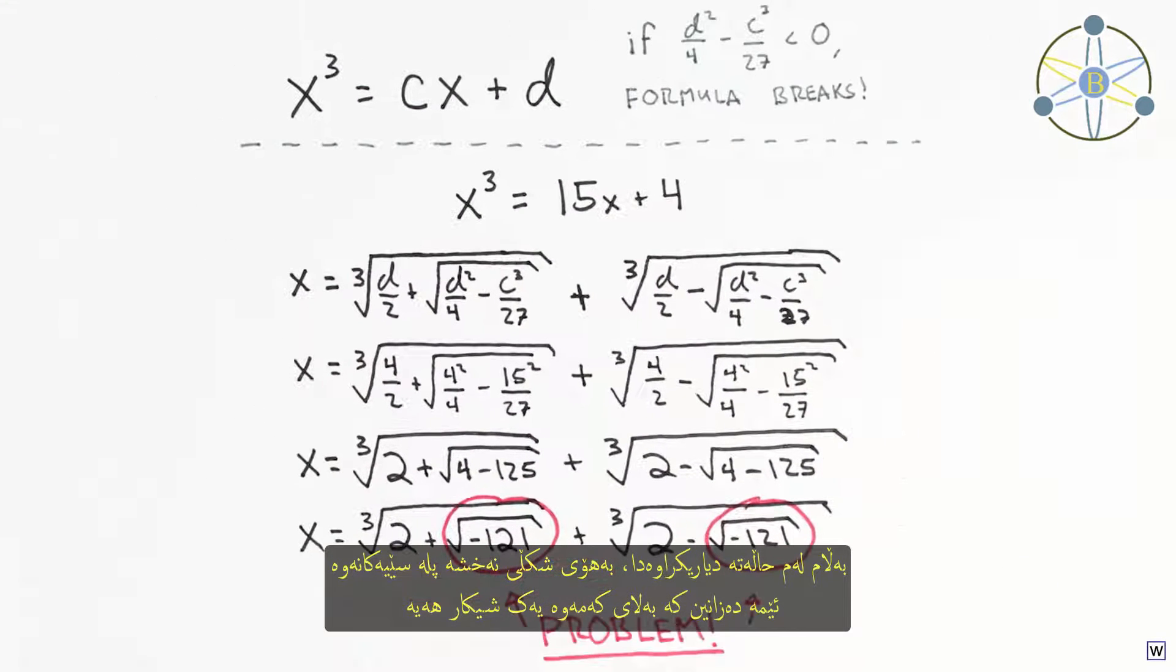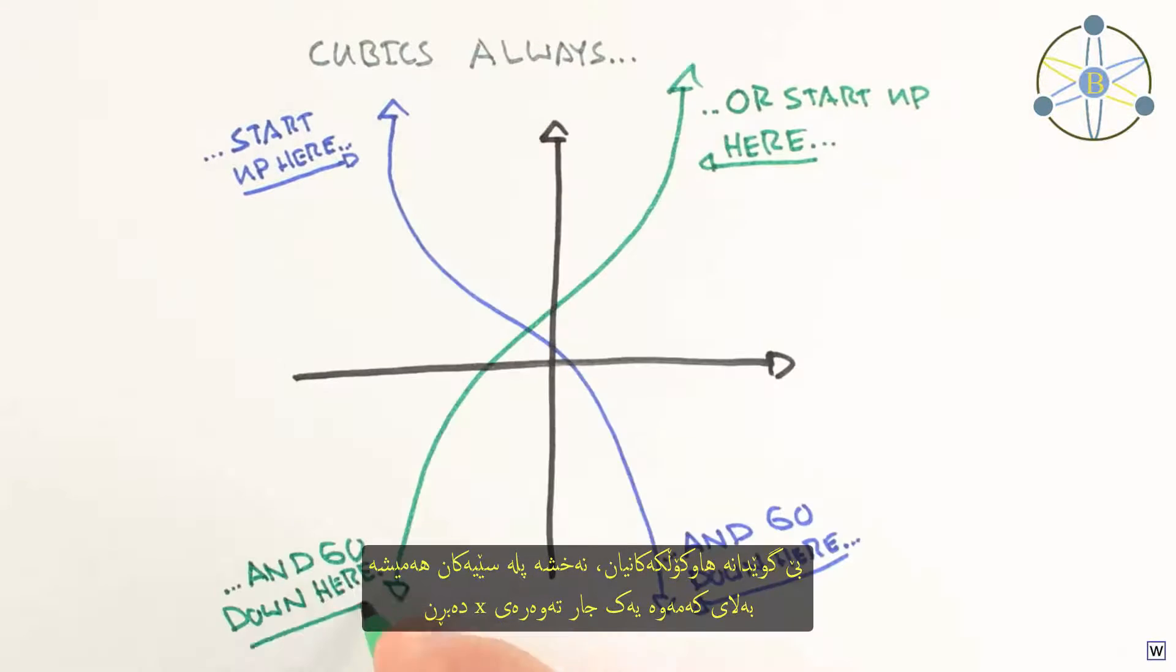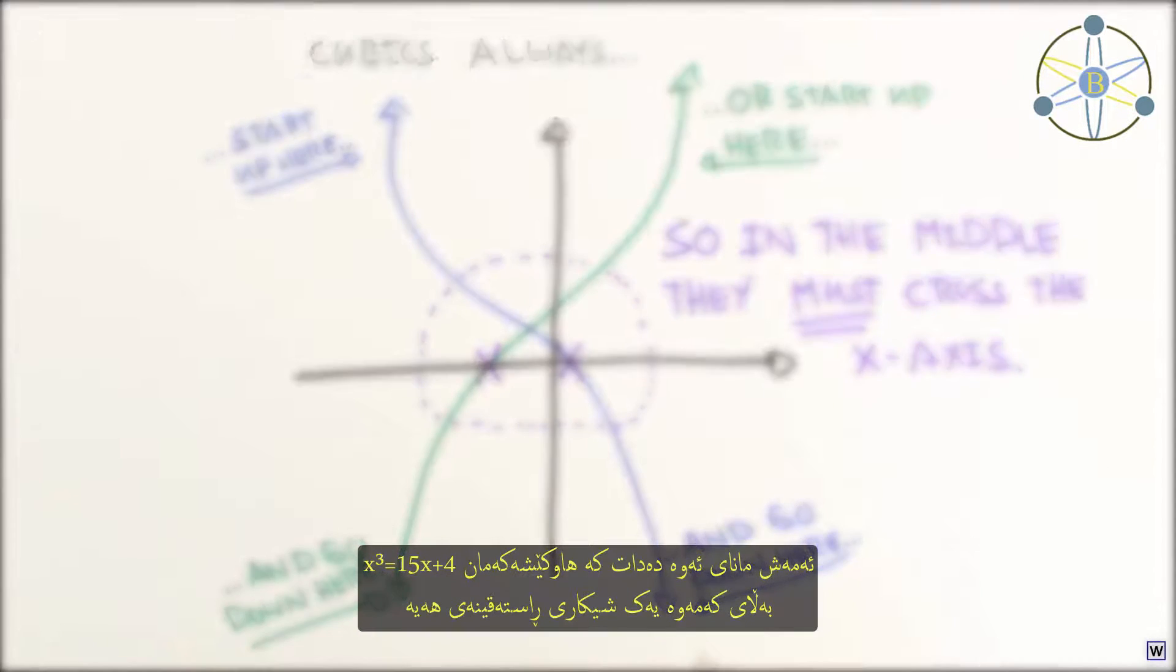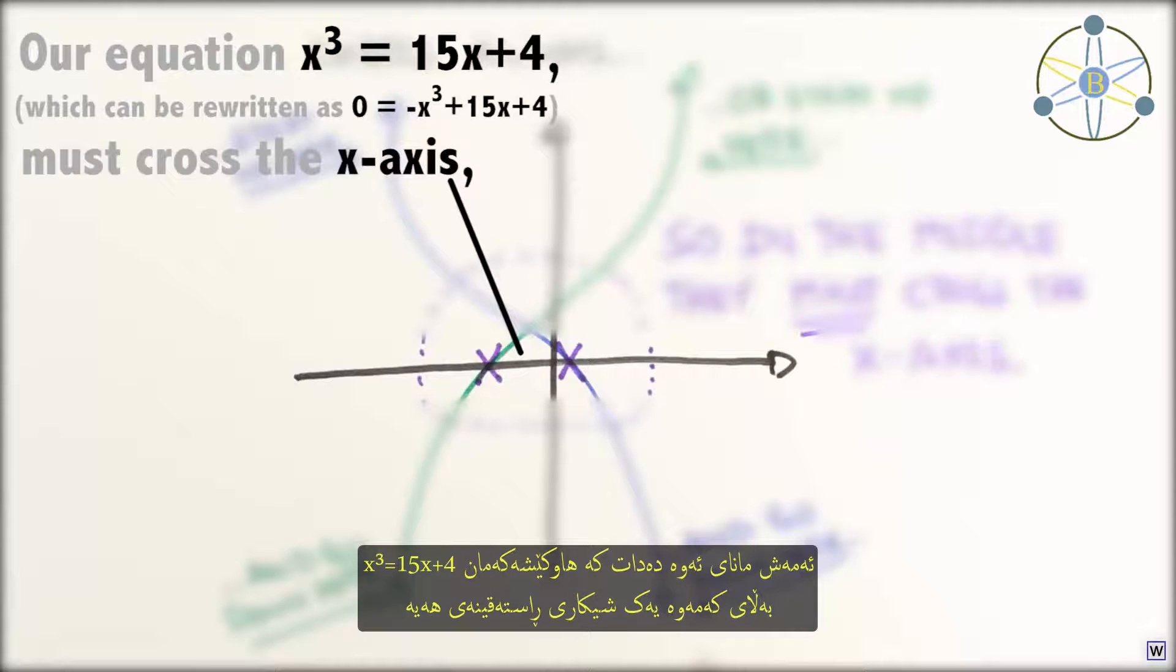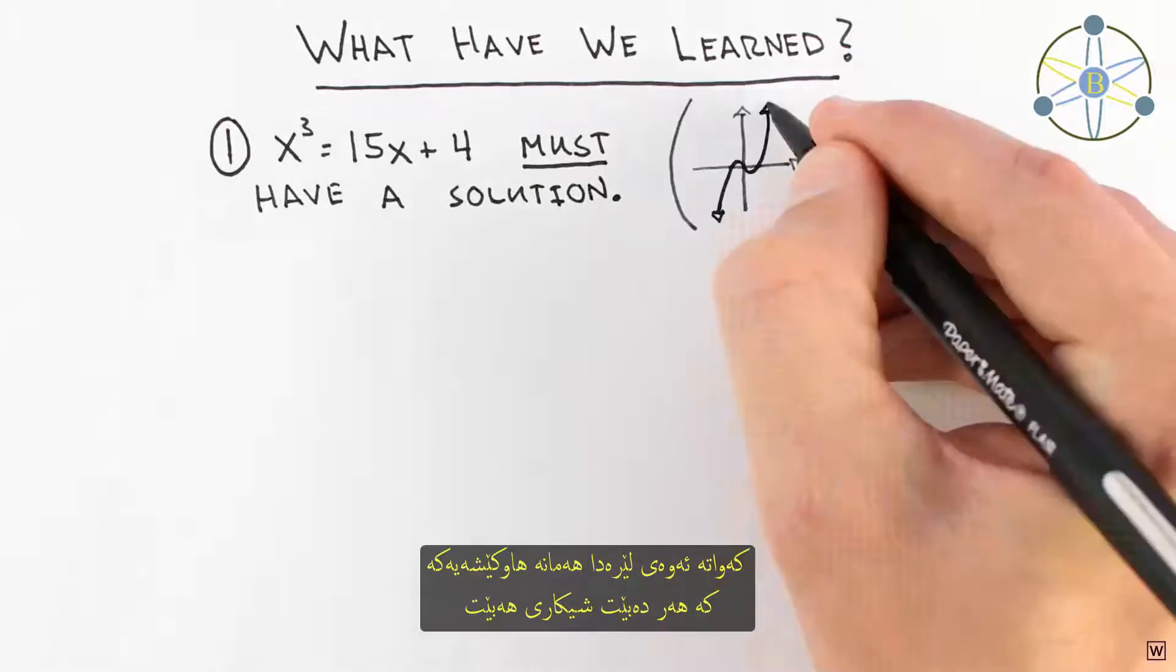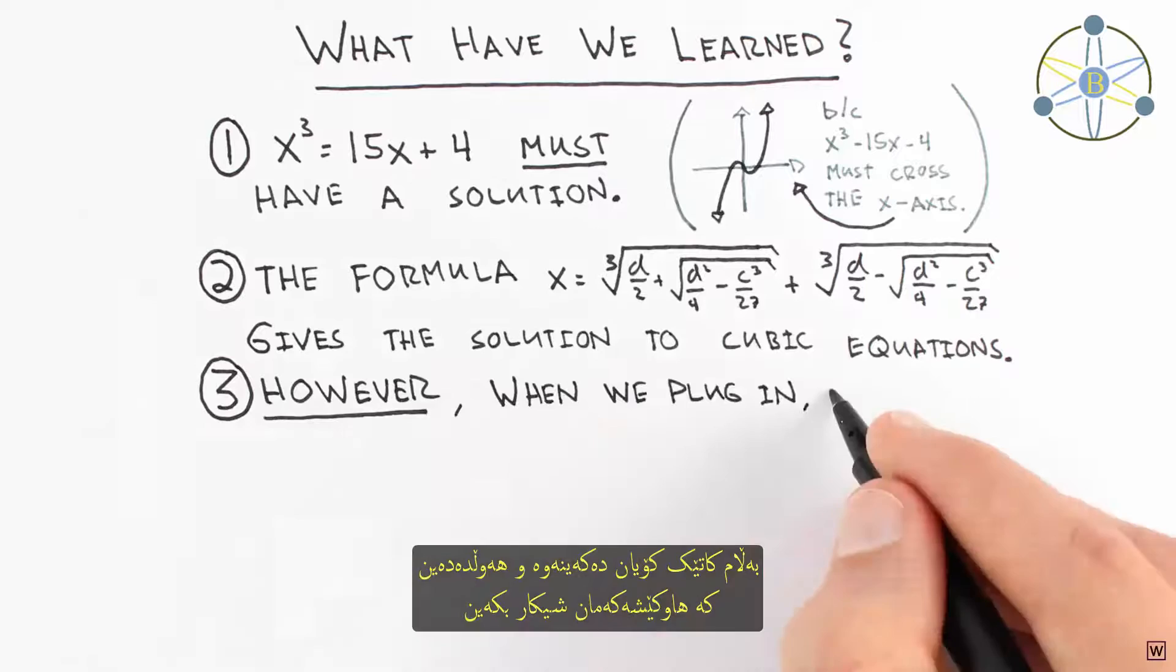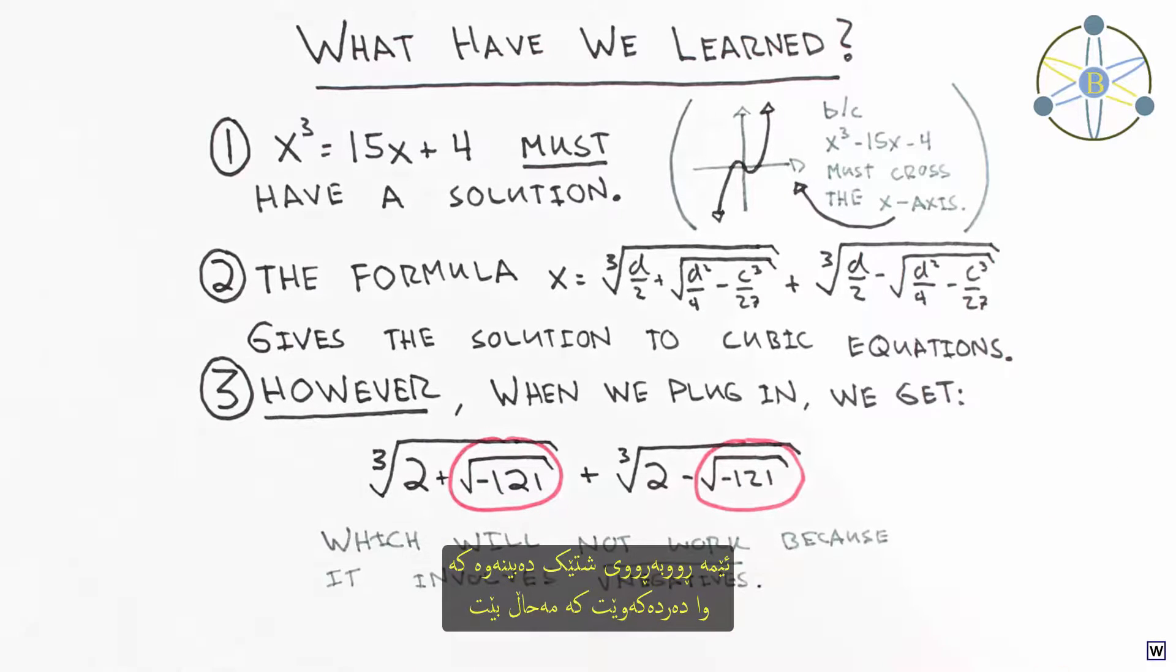However, in this case, we know there is at least one solution because of the way cubics are shaped. Regardless of their coefficients, cubic functions will always cross the x-axis at least once, meaning that our equation, x cubed equals 15x plus 4, will have at least one real solution. So what we have here is a problem that must have an answer, and a formula that has been proven to work. But when we put these together and try to solve the problem with our formula, we quickly arrive at what appears to be the impossible, the square roots of negative numbers.